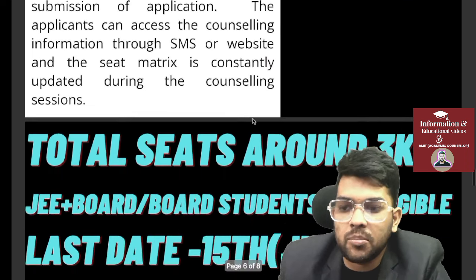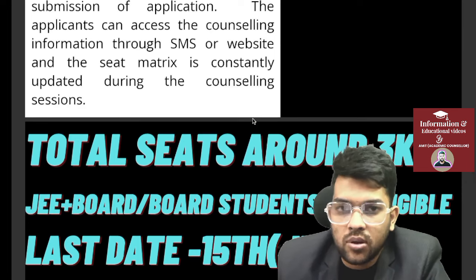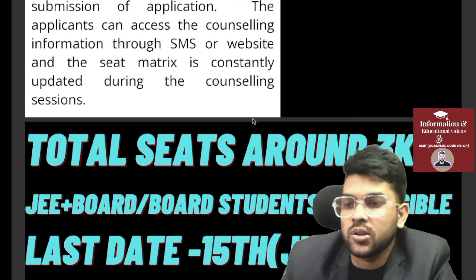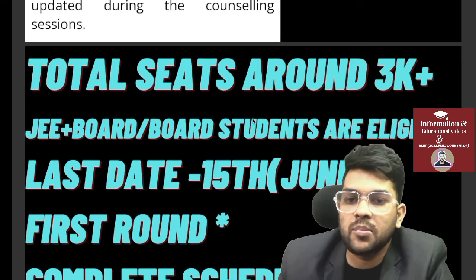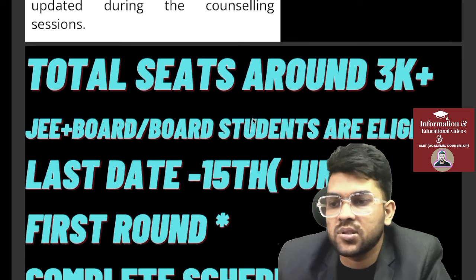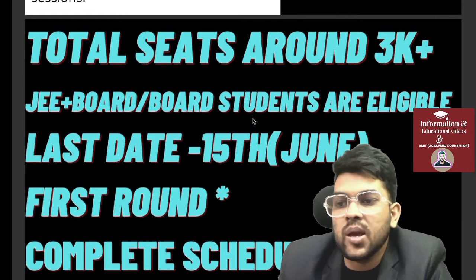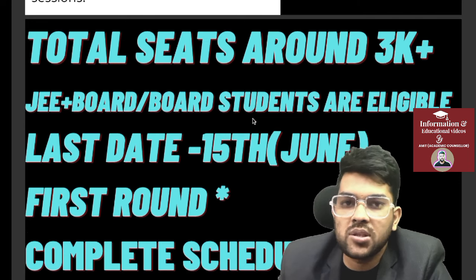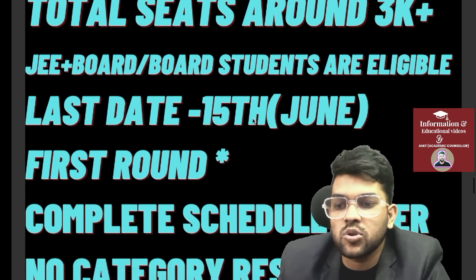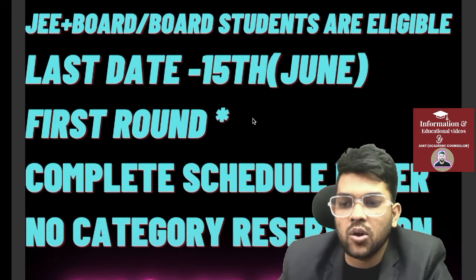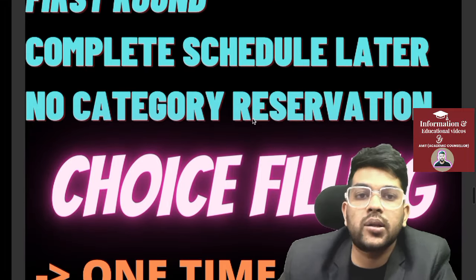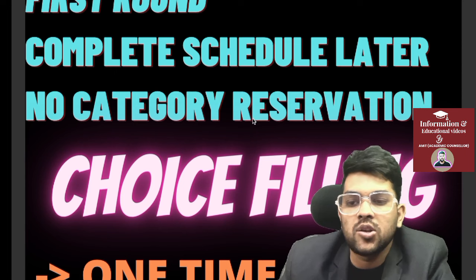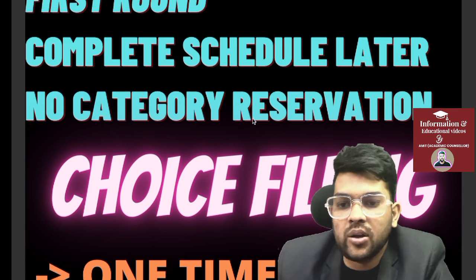The rank list will be published online within three hours of the deadline. Total seats across both campuses — main and second — are 3,000+, and with new branches added this year it may go up to 3,500. Both JEE + board students and board-only students are eligible. The last date for choice filling and registration is June 15th. First, second, and third counseling rounds will be done later — the complete schedule hasn't been announced yet. No category reservation (SC/ST/EWS) is available.